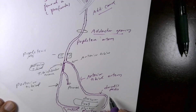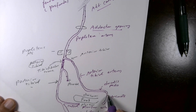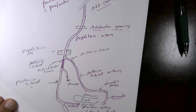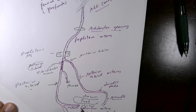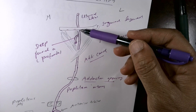The dorsalis pedis artery forms a curve called the arcuate artery, which extends from the medial to the lateral side of the dorsum of the foot.